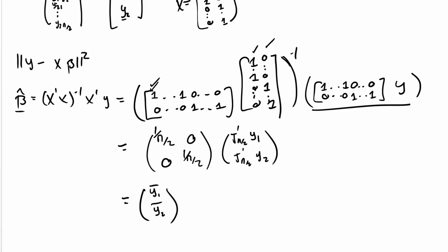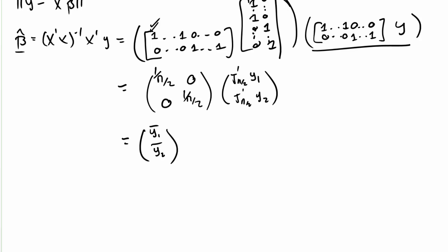So the fitted values in this case is just going to be, if you're in group one, it's going to be jn over 2 times y1 bar if you're in group one, and jn over 2 times y2 bar if you're in group two.